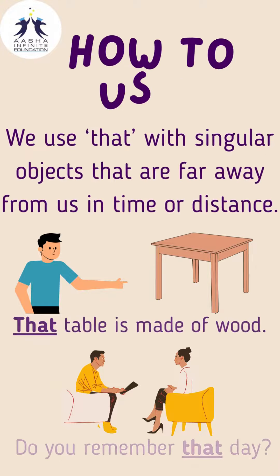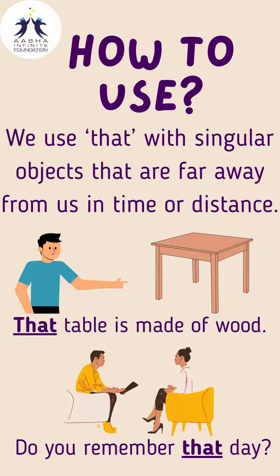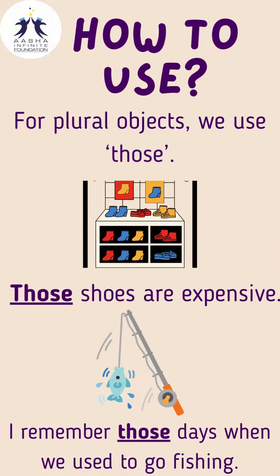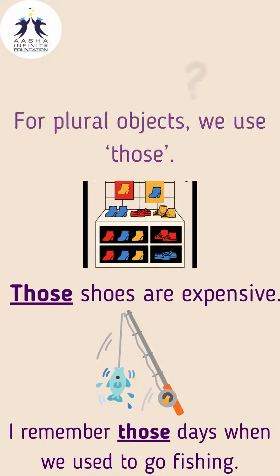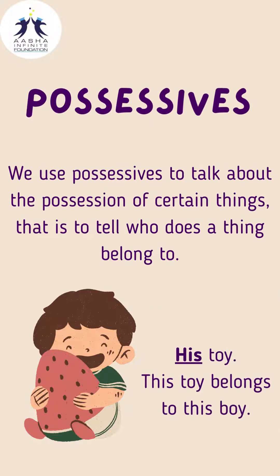We use 'that' with singular objects that are far away from us in time or distance. For example: 'That table is made of wood.' 'Do you remember that day?' For plural objects that are far, we use 'those'. For example: 'Those shoes are expensive.' 'I remember those days when we used to go fishing.'